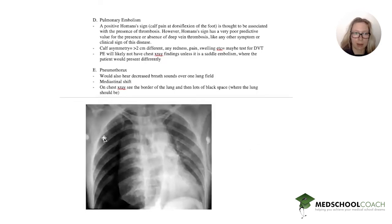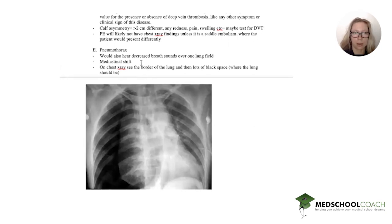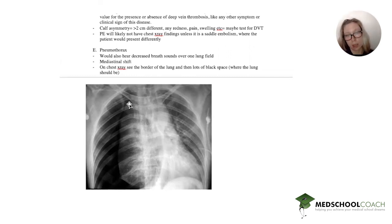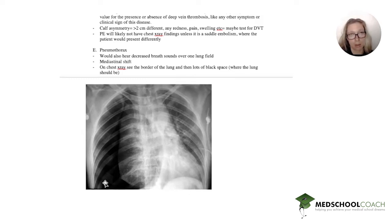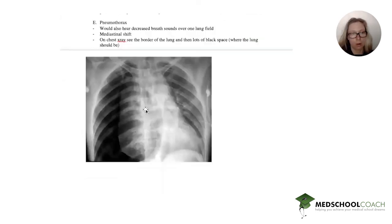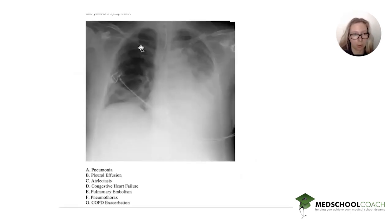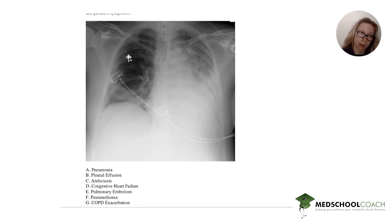Finally we have pneumothorax. You'd definitely hear decreased breath sounds over one lung field — exactly as in this patient — but you would see quite a mediastinal shift with pneumothorax. On chest x-ray you would see the border of a collapsed lung and then quite a lot of black space. The reason it's black is that normal lungs aren't completely black — they have vessels, which makes them slightly whiter. In this x-ray you can see some vascularity, so it's not a completely black lung.